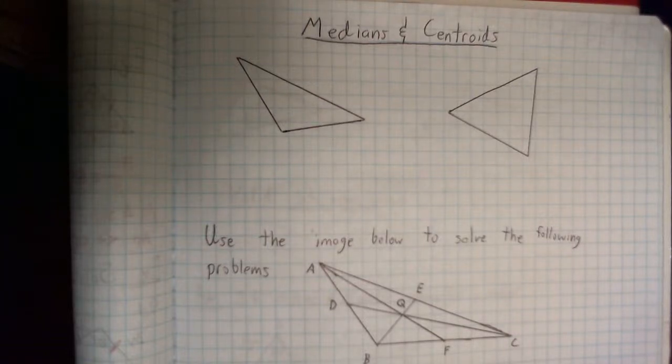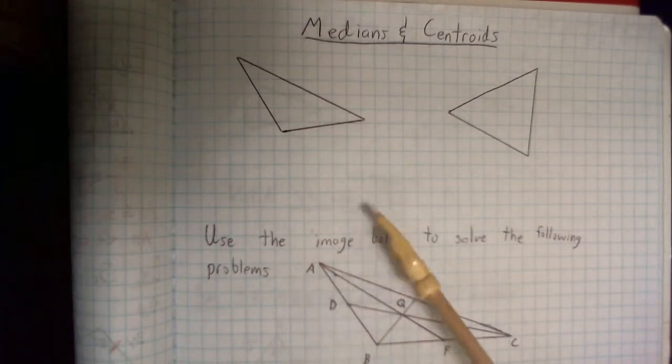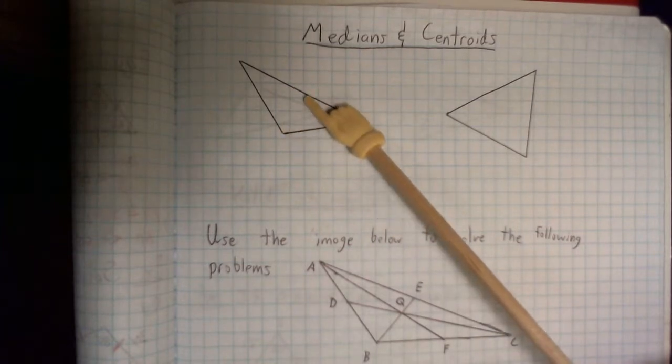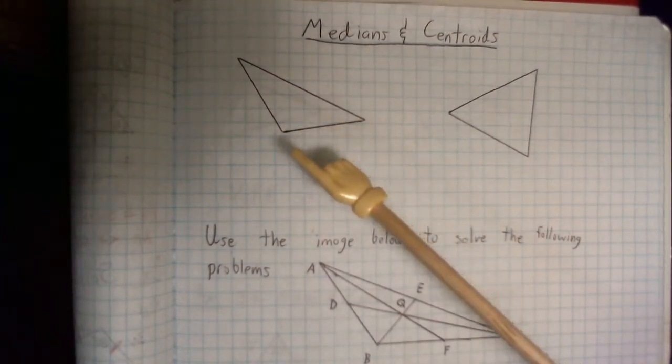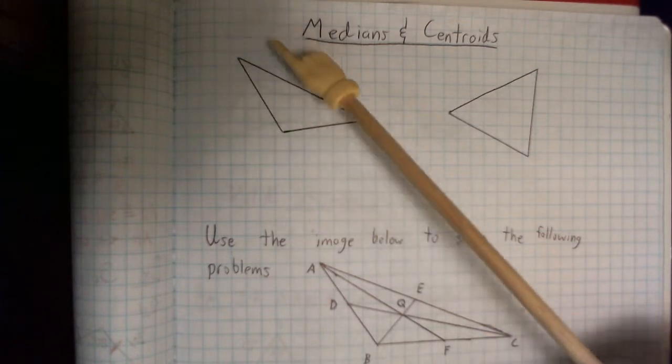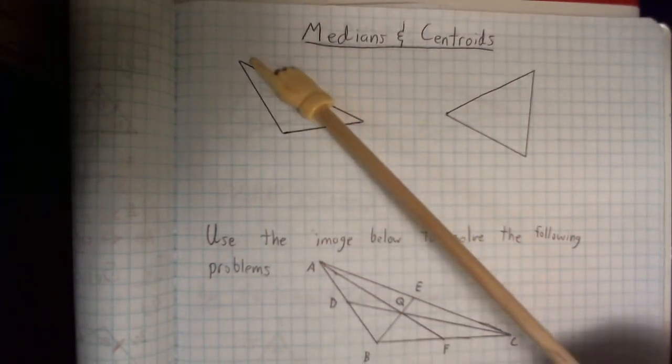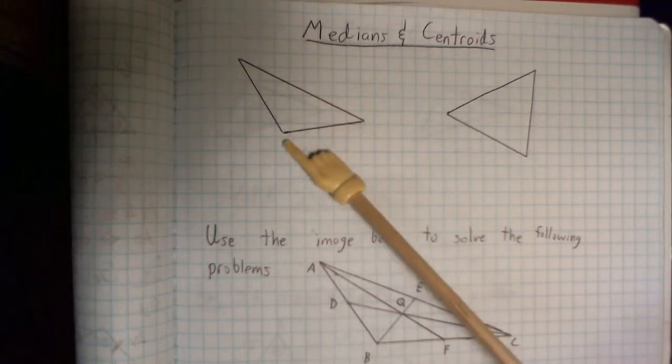Hello everybody. We're going to be talking about medians and centroids today. So first of all, let's discuss what a median and a centroid is. A median is a line segment that's going to go from a vertex to the opposite side of the triangle. Now, just so that we're clear, the opposite side is the side of the triangle that does not make up the angle where the vertex is.